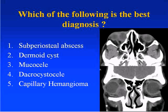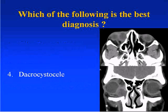We have two images, both the axial and coronal images. Number one is a subperiosteal abscess, number two is a dermoid cyst, number three a mucocele, number four a dacrocystocele, and number five a capillary hemangioma. Everyone says dacrocystocele, and that's the answer.